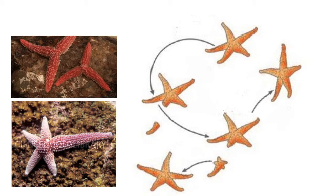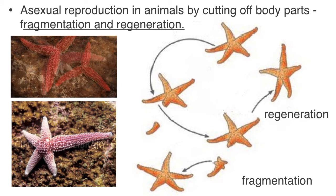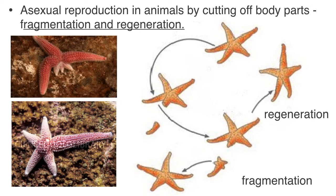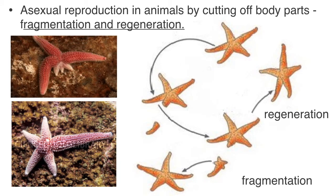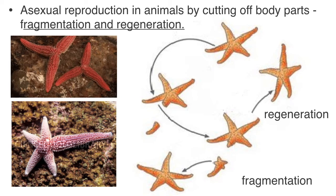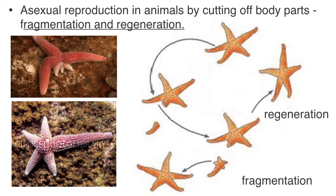Some animals also reproduce asexually. For example, starfish reproduce through a process called fragmentation and regeneration. This is a process of asexual reproduction that involves cutting body parts, and then the organism will regrow the body parts that were cut, and the body parts that were cut will regrow the rest of the organism. So for starfish, for example, if you cut out an arm of a starfish, that arm will regrow the rest of its arms into a brand new starfish, and the original starfish that lost the arm will regrow that arm itself.